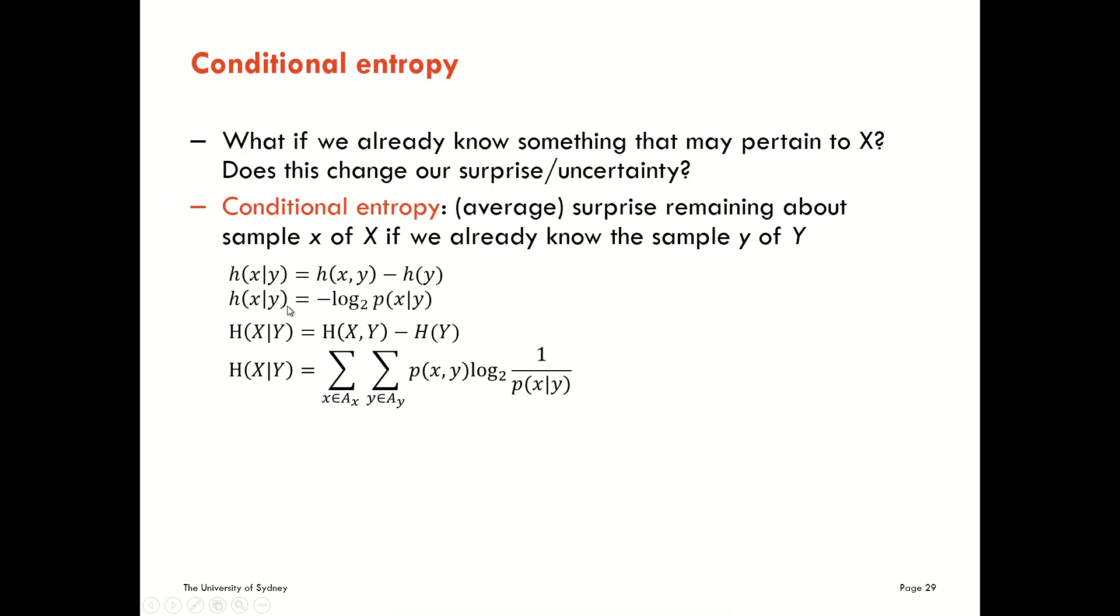We denote the conditional entropy using the bar symbol here. This value represents the conditional Shannon information content of realization X given that we've already read realization Y, or we can look at the capital letters denoting the average uncertainty for the variable X given a reading from the variable Y.